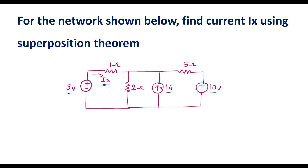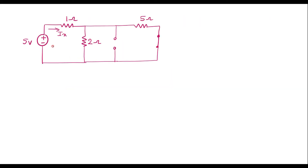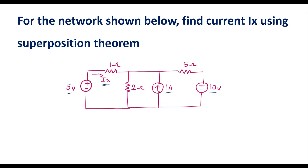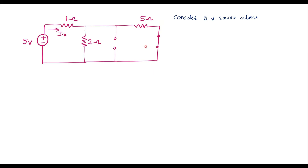First, let me consider the 5 volt source alone. In that case, we open the 1 amp current source and short the 10 volt voltage source. Let me redraw the circuit considering 5 volt source alone. Therefore, the 1 amp current source is open circuited and the 10 volt voltage source is short circuited.